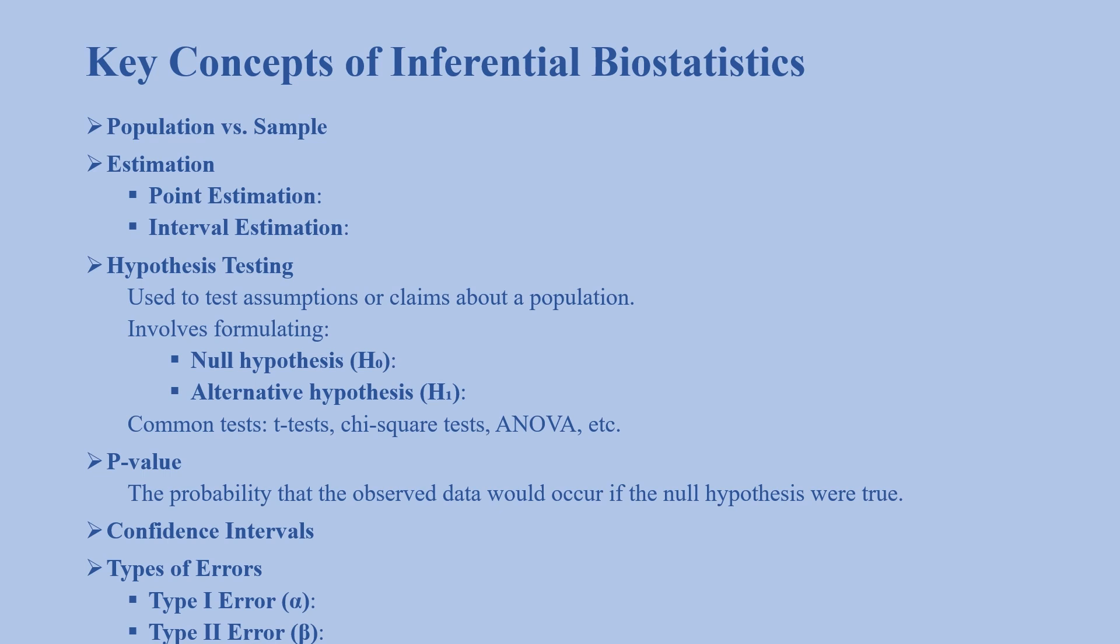The next concept is hypothesis testing, used to test assumptions or claims about a population. It involves formulating a null hypothesis (H₀: no effect or differences) and alternative hypothesis (Hₐ or H₁: there is an effect or difference between population parameters).